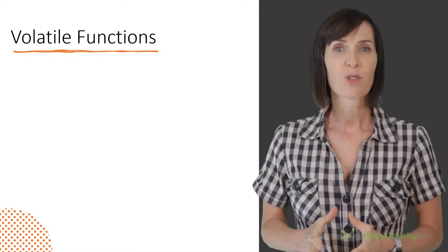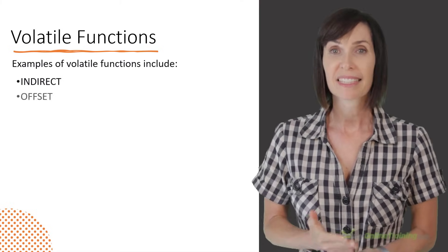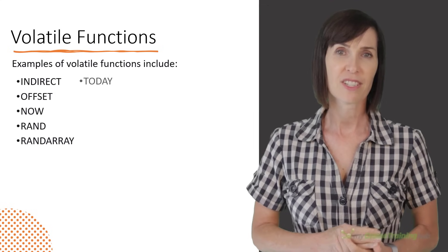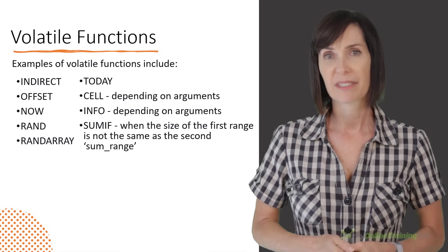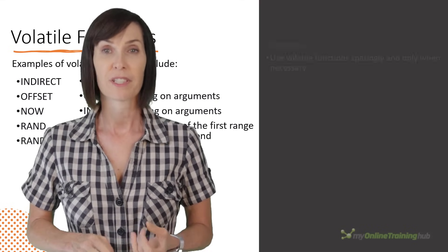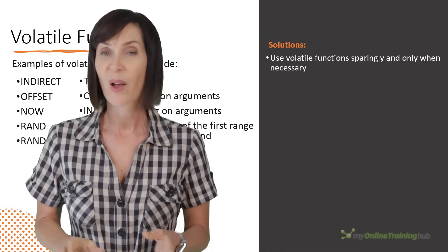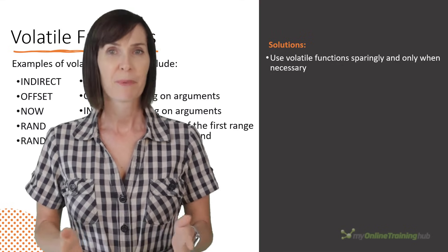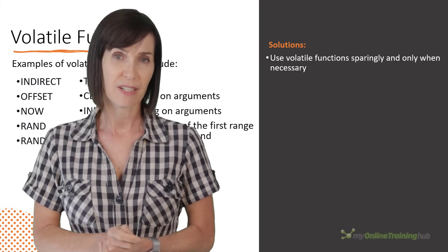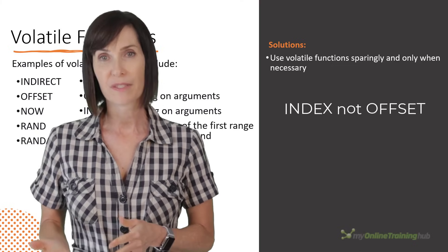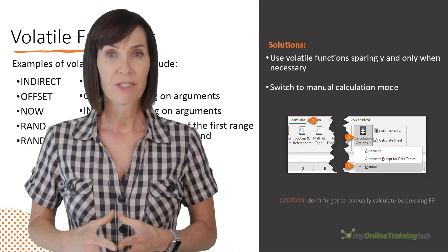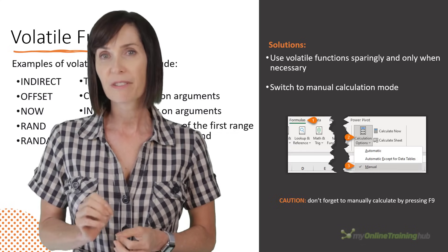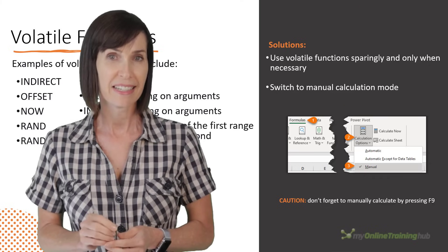Volatile functions can cause performance issues because they recalculate every time anything changes in the workbook, even if the change has no direct impact on the function's output. The solutions are to use volatile functions sparingly and only when necessary. If possible, use non-volatile alternatives like INDEX instead of OFFSET for dynamic named ranges. You can also switch to manual calculation mode. This way you only recalculate the workbook when necessary using the F9 key. Just be sure not to forget to recalculate.